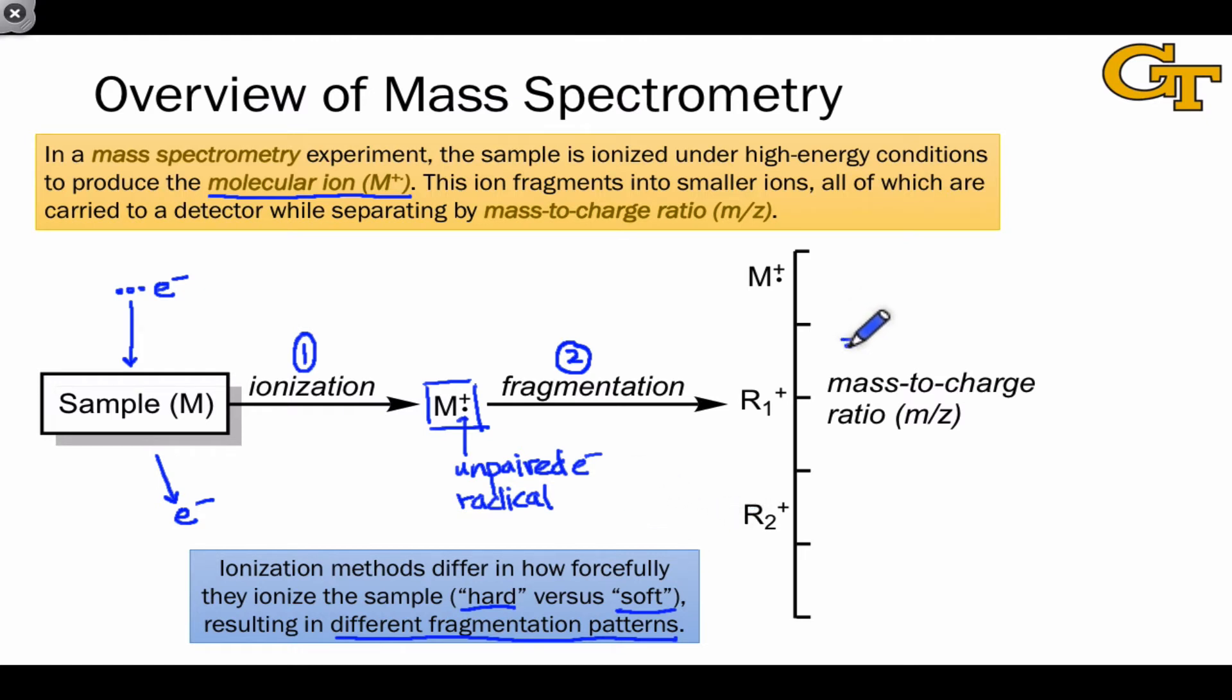The third stage is the actual measurement of the masses of the ions created in the ionization and fragmentation stages. On a mass spectrum, the x-axis, rather than being frequency, as it would be in a spectroscopy experiment, is mass-to-charge ratio, or m-to-z. The motion of a charged ion depends on both its mass and its charge, and so what mass spectrometry actually measures is this mass-to-charge ratio. In the vast majority of cases, the molecular ion and the fragments have a charge of plus 1, meaning that we can read molar mass in grams per mole directly from a mass spectrum. In addition to seeing the molecular ion, we also see the masses of any fragments formed in the fragmentation process in the mass spectrum.